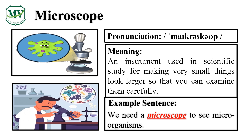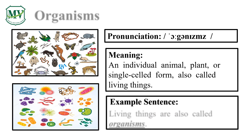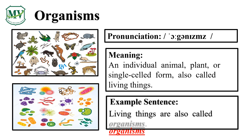Let's spell it! O-R-G-A-N-I-S-M-S. Organisms. Great! Living things are also called organisms. Can you try reading the sentence on your own?